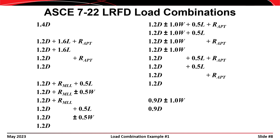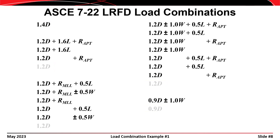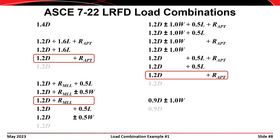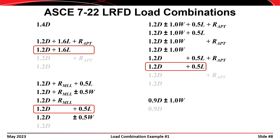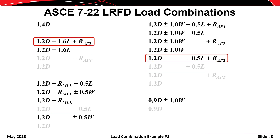If we consider all the permutations next to each other, some combinations can obviously be eliminated. For example, 1.4 times dead load governs over 1.2 or 0.9 times dead load. Similarly, 1.2 times dead load plus one times roof loading at its maximum lifetime level should govern for dead load and roof loading combinations. The governing combinations for dead plus live, and dead plus live plus roof loading, are also identified.